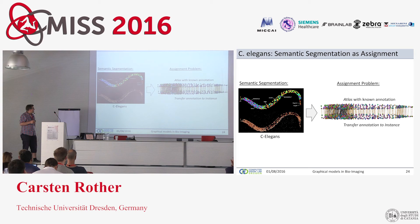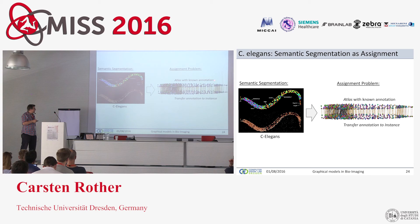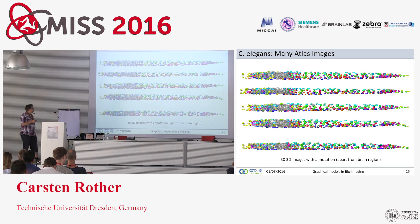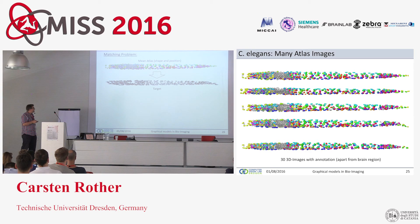Now let's talk about another assignment problem requiring a more complicated solver: semantic segmentation of C. elegans. For each nucleus we want to find its name. We formulate it as an assignment problem between an atlas where we know the labeling and an instance where we don't. With a unique one-to-one mapping, you can transfer the name from the atlas. We have 30 C. elegans atlas images with corresponding names, excluding the brain region which is too densely populated.